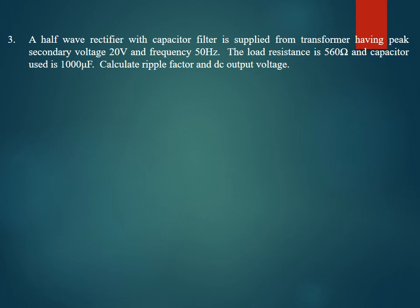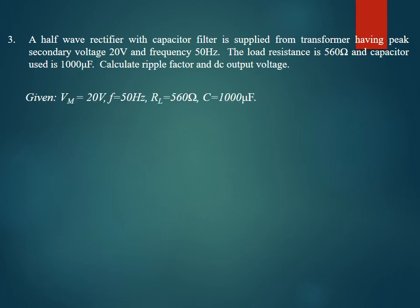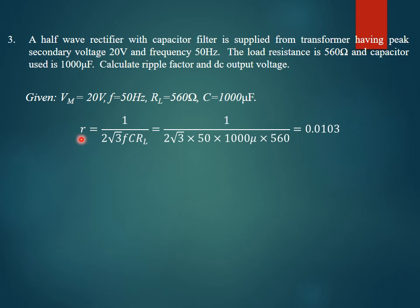The third problem involves a half-wave rectifier with a capacitive filter, supplied from a transformer with peak secondary voltage Vm = 20 volts (directly given), a frequency of 50 Hz, load resistance of 560 ohms, and a capacitor of 1000 μF. We need to calculate the ripple factor and DC output voltage. Applying the formula for ripple factor, r = 1 / (2√3 · f · C · RL), and substituting gives a ripple factor of 0.0103.